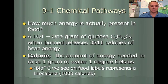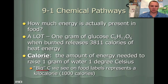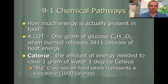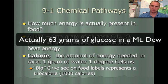A calorie is the amount of energy needed to raise 1 gram of water 1 degree Celsius. Oftentimes on our food labels, we'll see it written as a big C. Big C means a kilocalorie. So if you were looking at a Mountain Dew bottle and it said 240 calories, it actually has 240 kilocalories — that's 240,000 calories. So you get 3,811 calories from 1 gram of glucose, meaning it takes a lot of sugar to make that 240 kilocalories in a Mountain Dew.